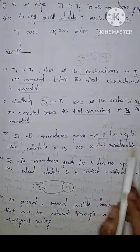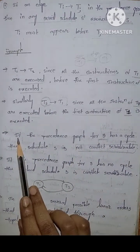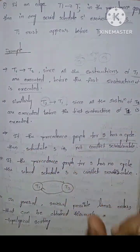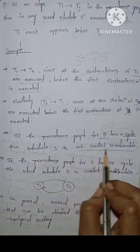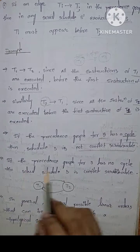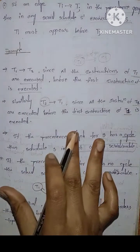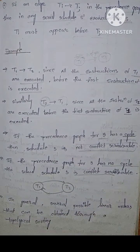If the precedence graph for S has a cycle, then the schedule S is not conflict serializable. Precedence graph one is the schedule precedence graph and if there's a cycle, then the schedule is not conflict serializable.